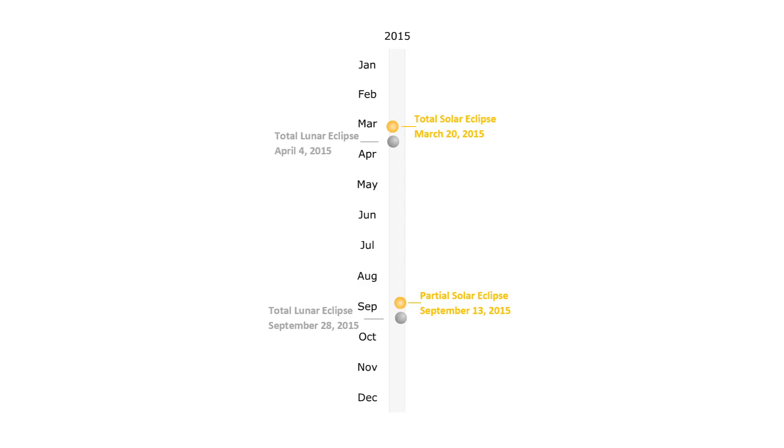The frequency of eclipses is illustrated using a diagram with time on both axes. Here, solar eclipses are indicated by Sun icons and lunar eclipses by Moon icons. This column represents 2015.